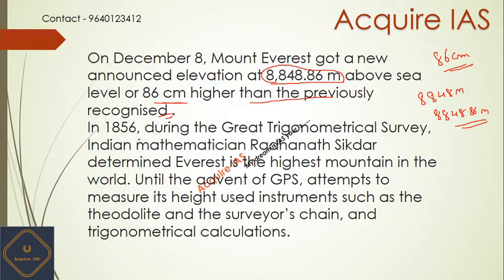In 1856, during the Great Trigonometrical Survey, Indian mathematician Radhanath Sikhar determined that Everest is the highest mountain in the world. This name — Radhanath Sikhar — is most important, please remember it. Next, until the advent of GPS, attempts to measure its height used other instruments.